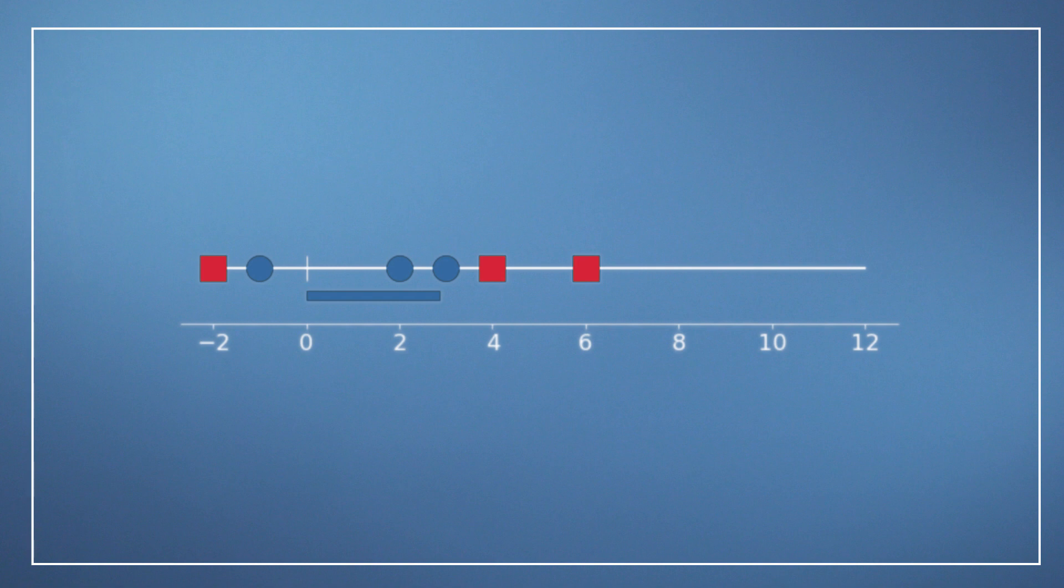Remember that the variance is the average squared distance of the data points from the mean. If we scale the data set by a factor of 2, the distance of every data point to the mean is scaled by 2. But the squared distance is scaled by 4.